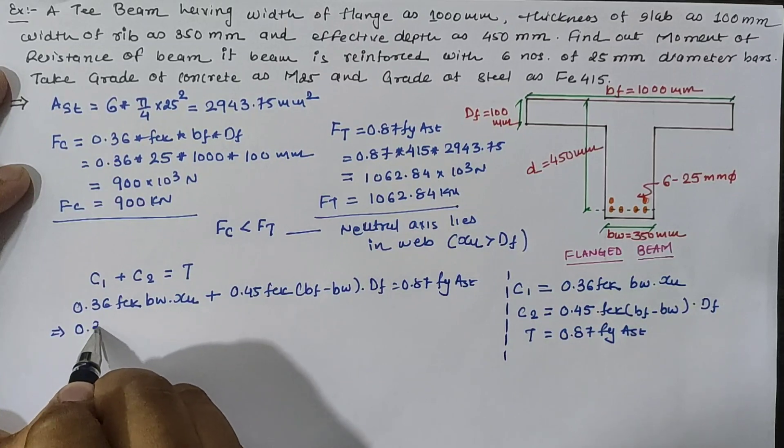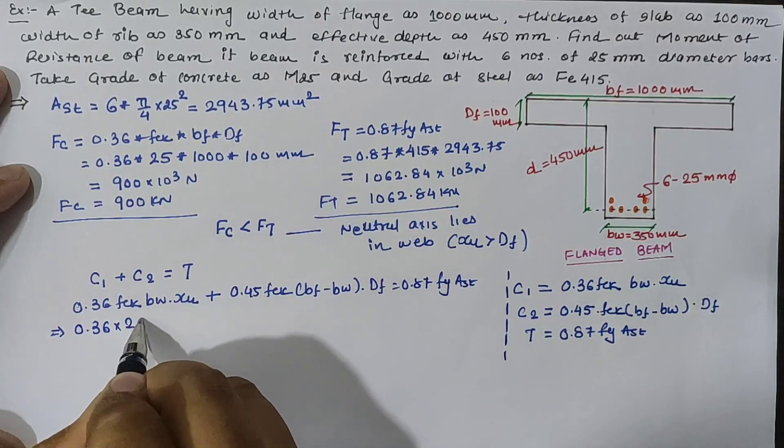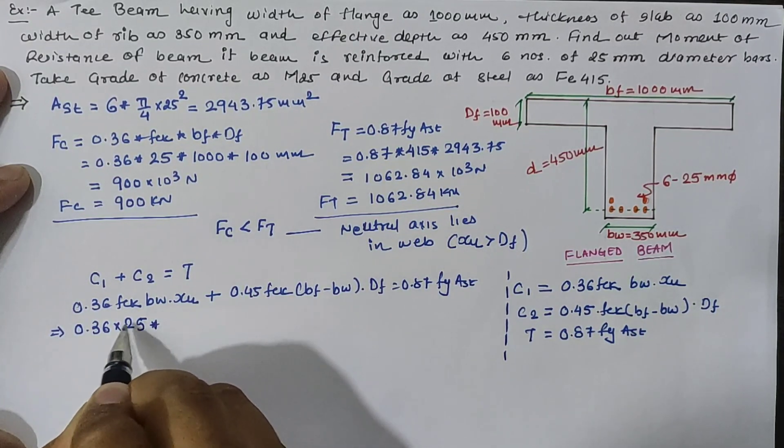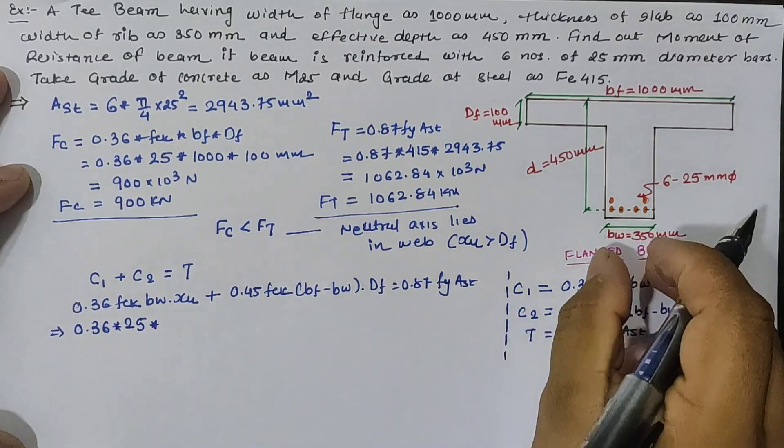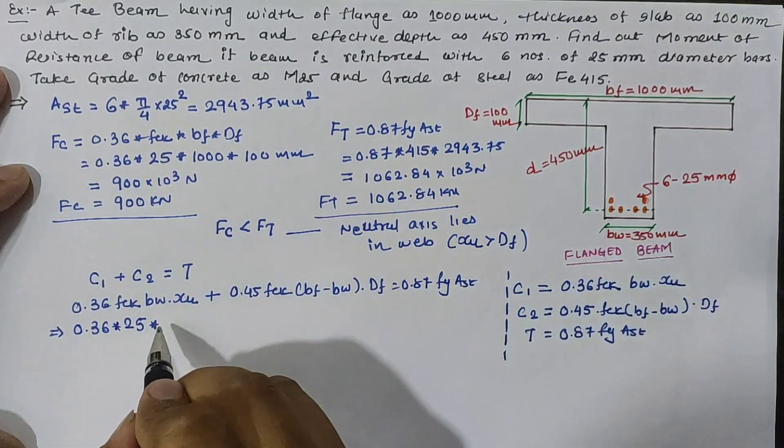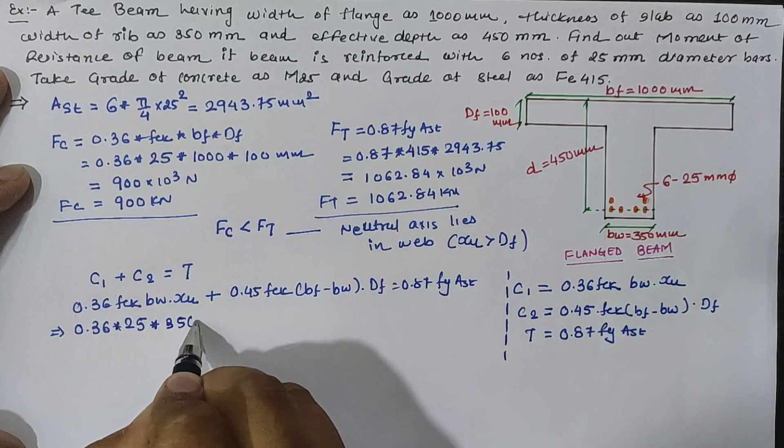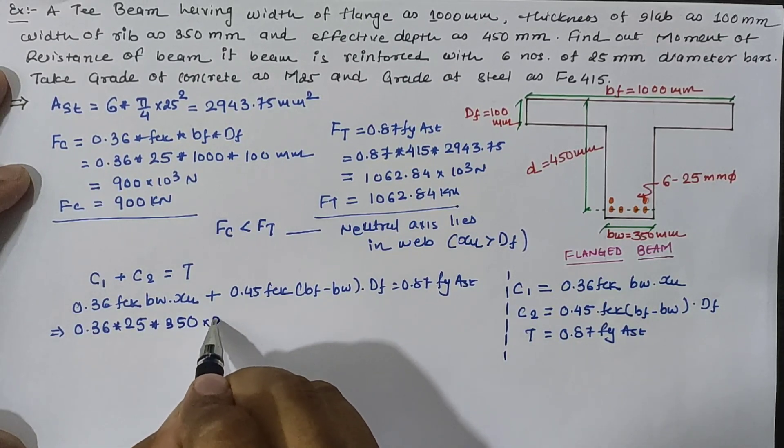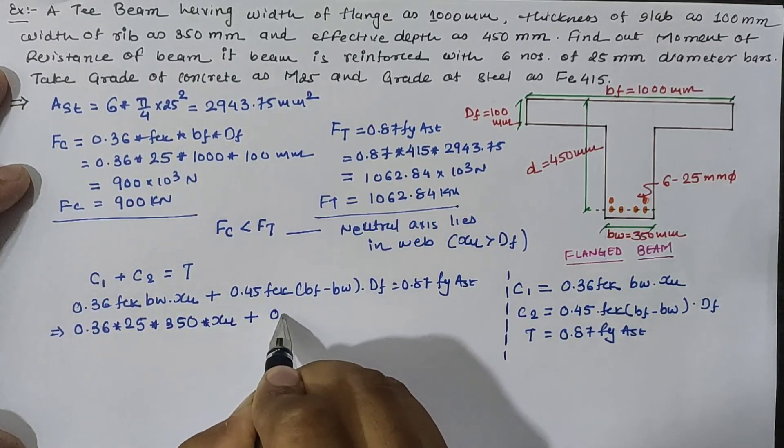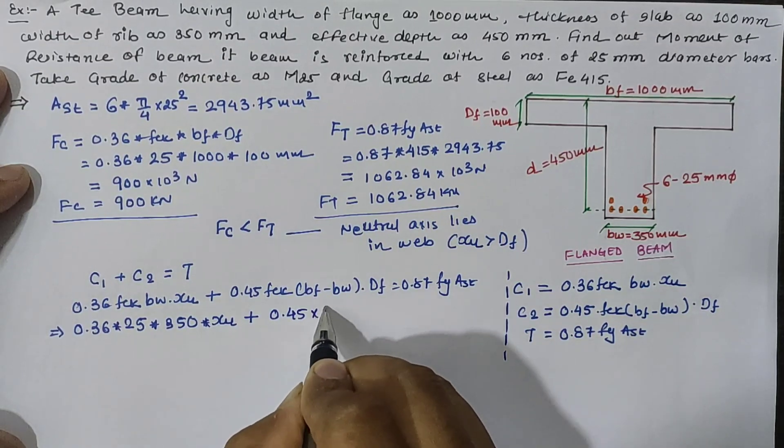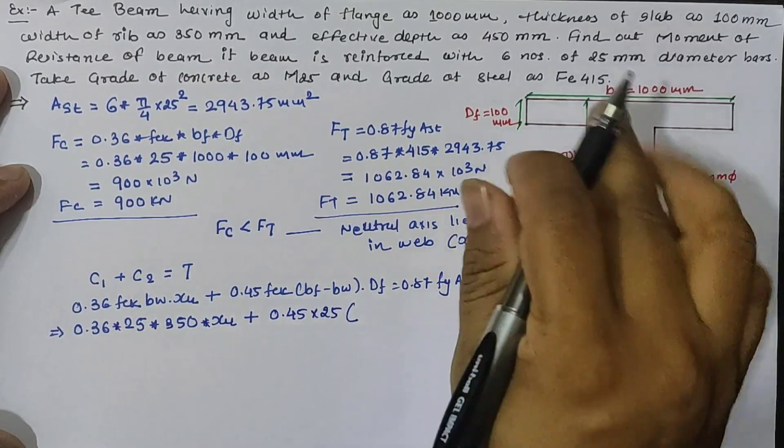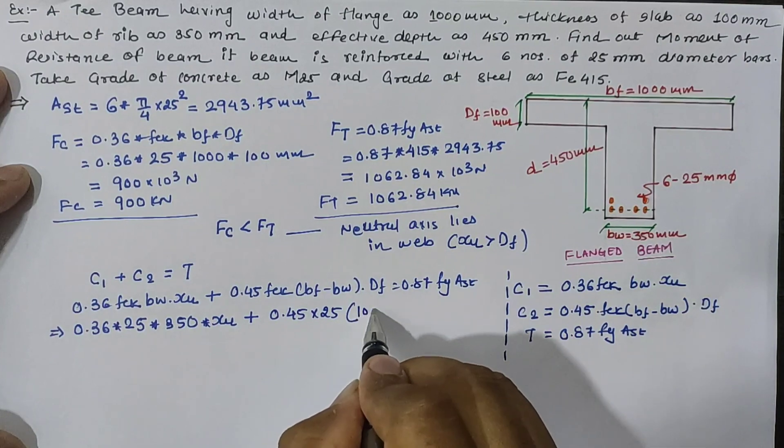Now 0.36 is constant, fck is given as 25 N/mm², bw width of rib as 350 mm, and xu is unknown value, plus 0.45 fck is given as 25, bf width of flange as 1000.